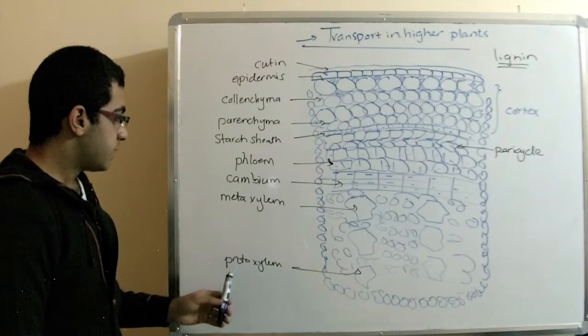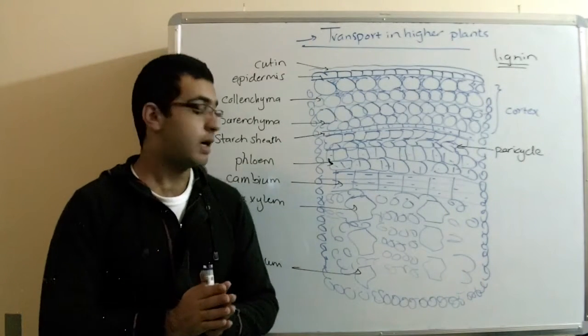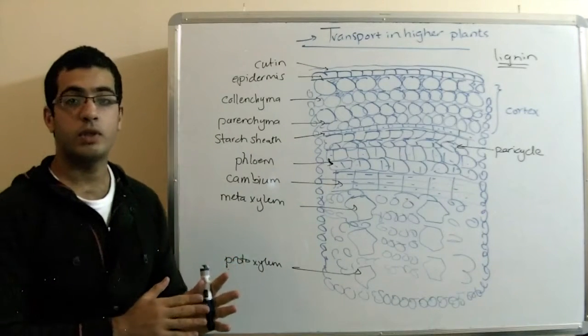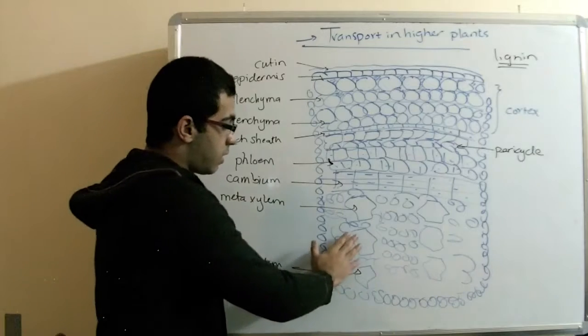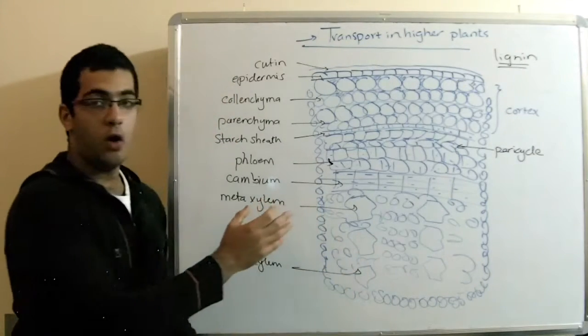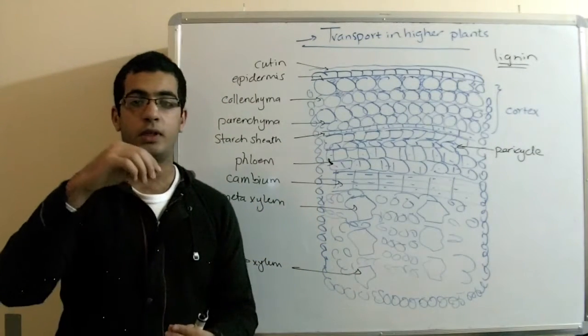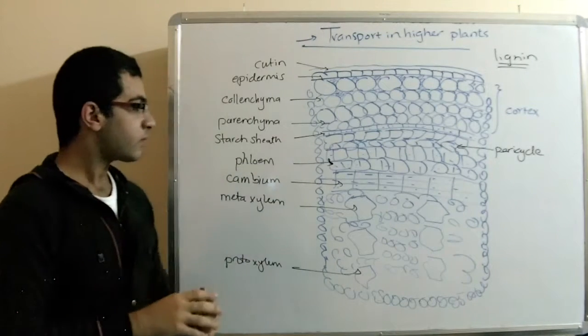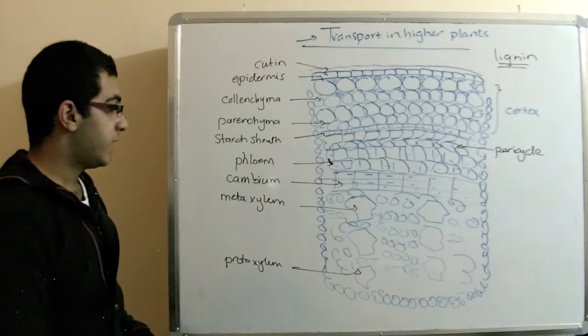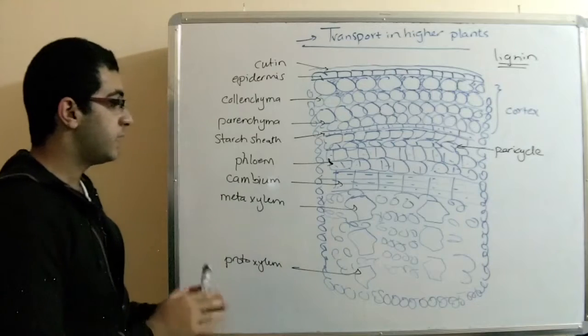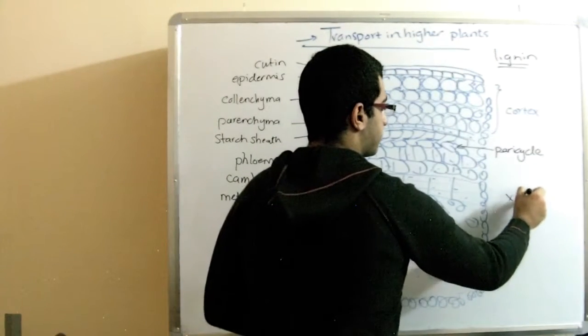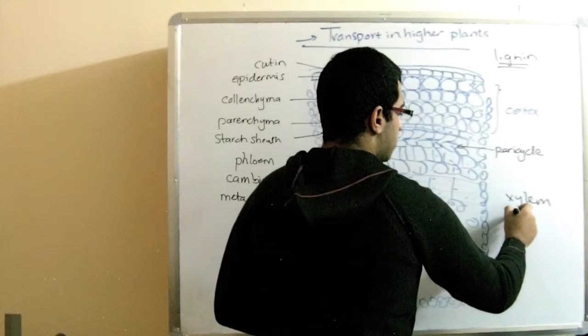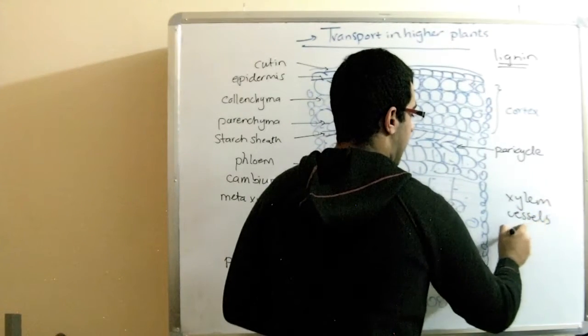The xylem vessels have also another type, which is called the tracheids. And apparently, the xylem vessels are open. They are widely open. While the tracheids have pointed ends. So, they are not joined together. They have pointed ends. And this is the difference between the xylem vessels and tracheids.